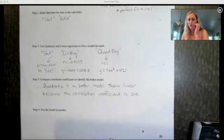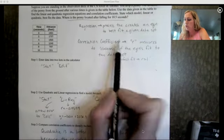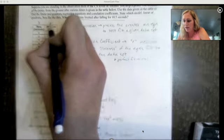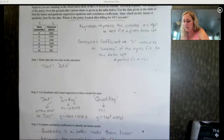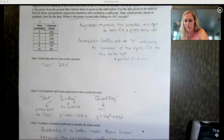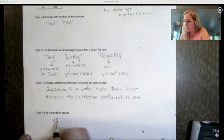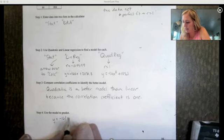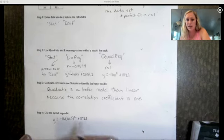Now it says use the model to predict. Remember at the top it said where is the penny located after falling for 10 and a half seconds. Time was our x column when it was graphed. Time is x, y is the distance. I'm going to plug in 10 and a half for x into my quadratic equation. y equals negative 16, we're going to plug in 10 and a half for x. This is going to tell us how far above the ground the penny is after 10 and a half seconds.